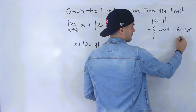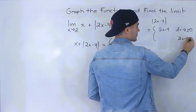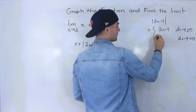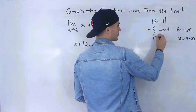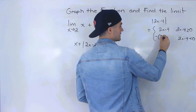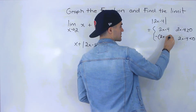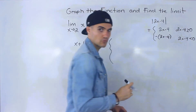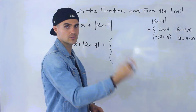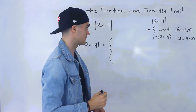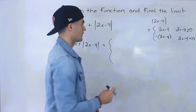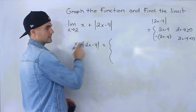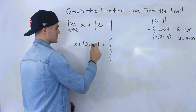Now, if this 2x minus 4 expression is going to be negative — less than 0 — then we're going to have to take that expression 2x minus 4, which is negative, and multiply it by negative 1 in order to turn it positive. So using that, we can just add the x to both of those expressions.